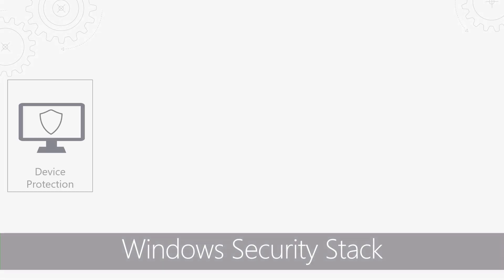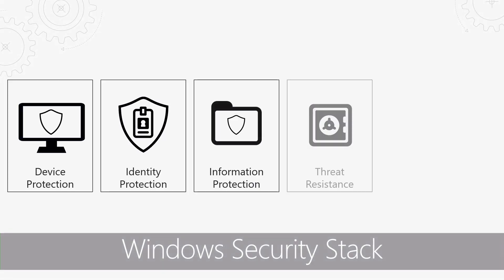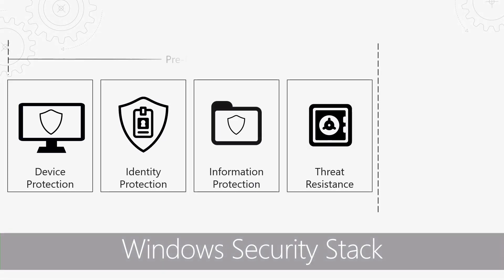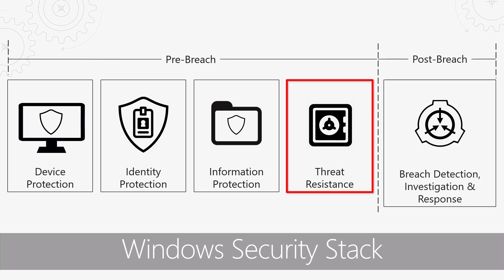Windows Application Guard is a pre-breach defense that is part of the Windows Security Stack Threat Resistance. It's designed to stop these attacks and prevent data theft, espionage, and ransomware from affecting your organization.